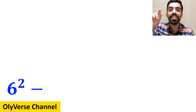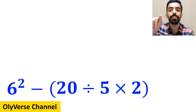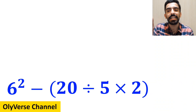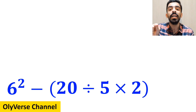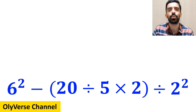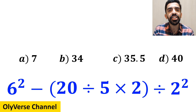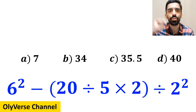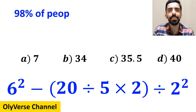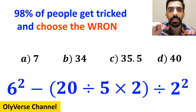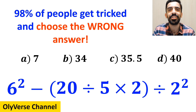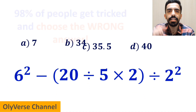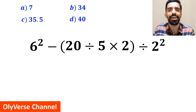What is the value of the expression 6 squared minus open parenthesis 20 divided by 5 times 2 closed parenthesis, then divided by 2 squared? Which option do you think is the correct answer to this question? 98% of people get tricked and choose the wrong answer. Let's break it down and solve it together.